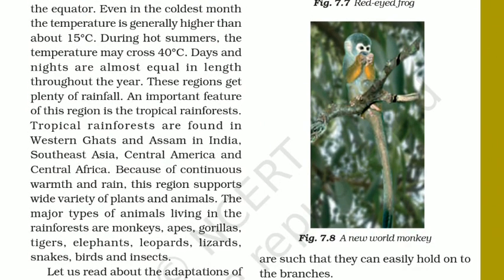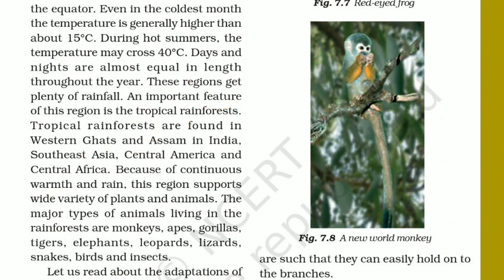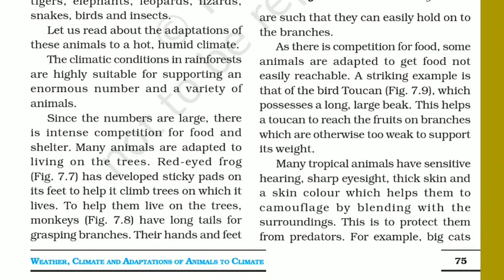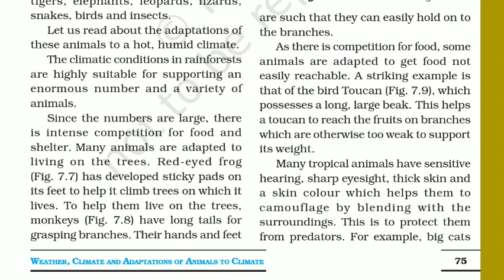Similarly, in the tropical rainforest the monkeys have a long tail. This long tail helps them to grab branches very easily, so they can survive up in the trees. If they come to the ground, they can easily become prey. By living on trees they can eat leaves, seeds, and fruits, which helps them meet the competition for food. Their body structure also helps them to survive in the trees.